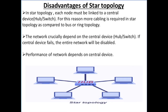Now we have disadvantages of star topology. In star topology, each node must be linked to a central device. For this reason, more cabling is required in star topology as compared to bus or ring topology — you need more cables because all the devices are connected with the help of cables. The network crucially depends on the central device — if the central device fails, the entire network will be disabled. Performance of the network also depends on the quality of the central device.